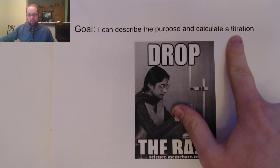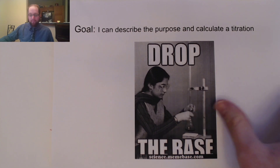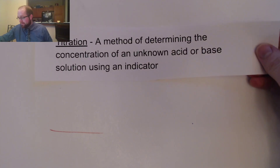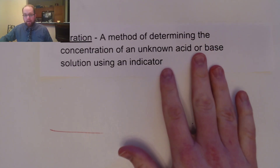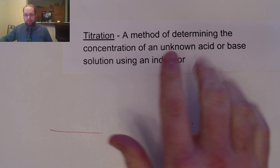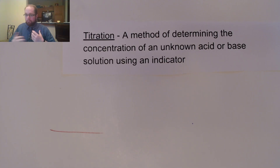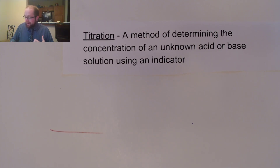Let's talk about some of this key vocab. What is a titration? Titration in chemistry is something relatively simple. It is a method of determining the concentration of an unknown acid or base solution using an indicator.